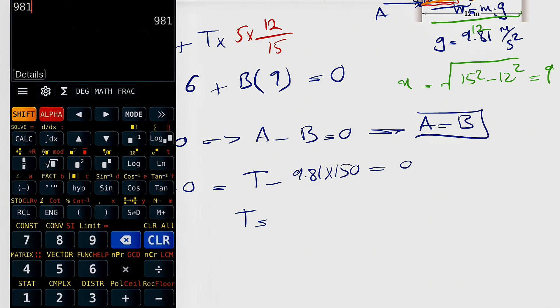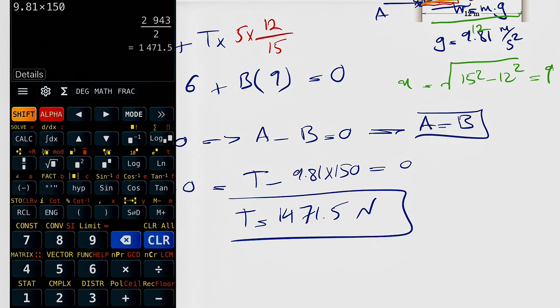Let's see what we get. 9.81 times 150, so 1471.5 Newtons. So that's our T.